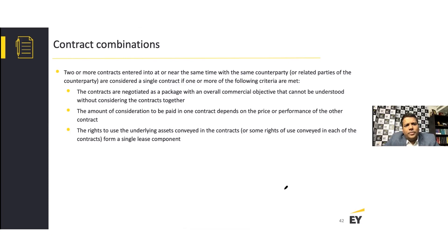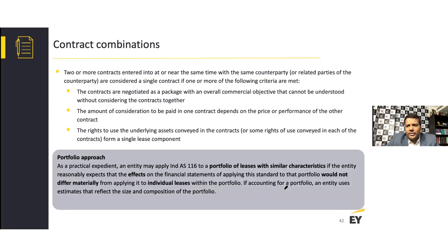Additional criteria for contract combination include: the amount of consideration to be paid in one contract depends on the price or performance of the other contract; or the rights to use the underlying asset conveyed in the contracts form a single lease component. As a practical expedient, an entity may apply INDAS 116 to a portfolio of leases with similar characteristics if the entity reasonably expects that the effect on the financial statements of applying the standard to that portfolio would not differ materially from applying it to individual assets within the portfolio.